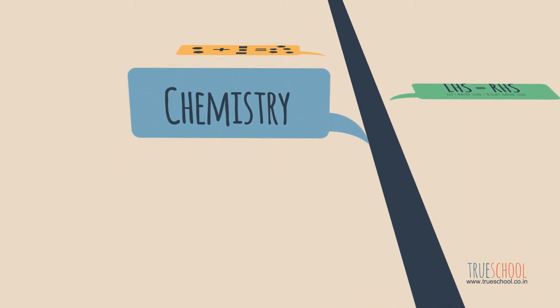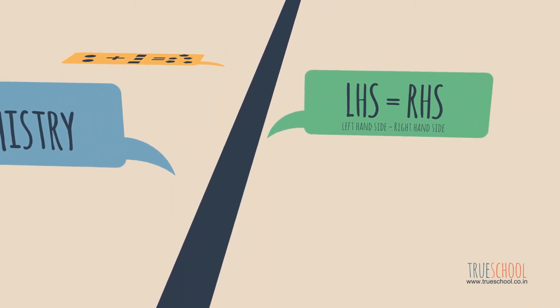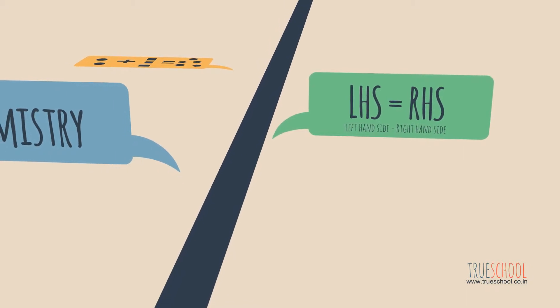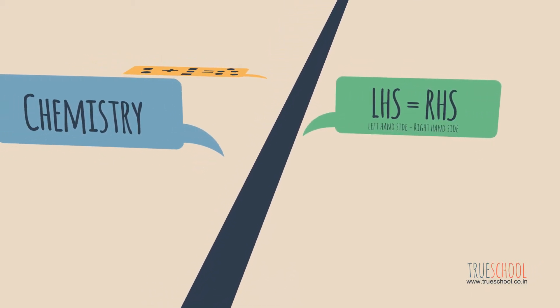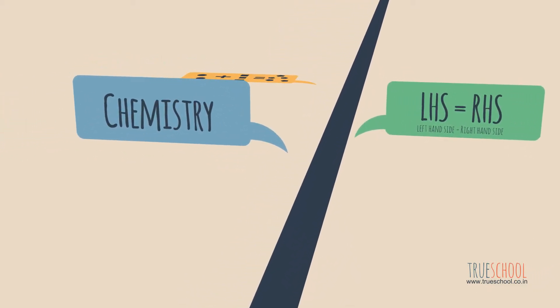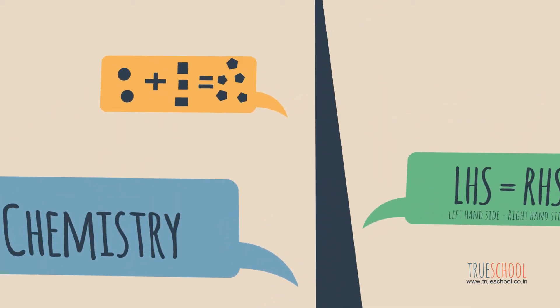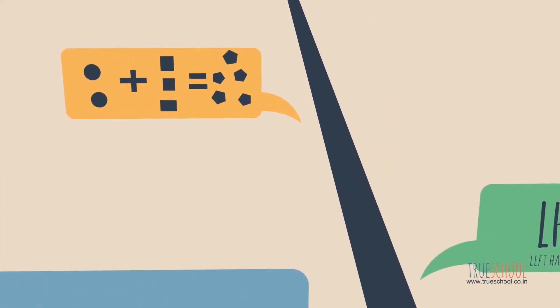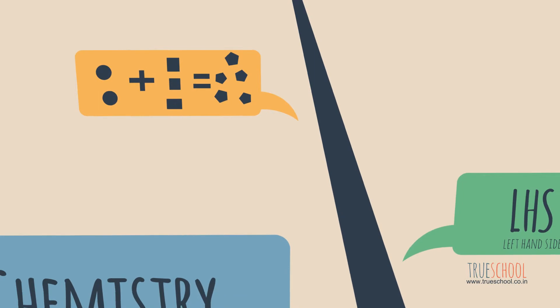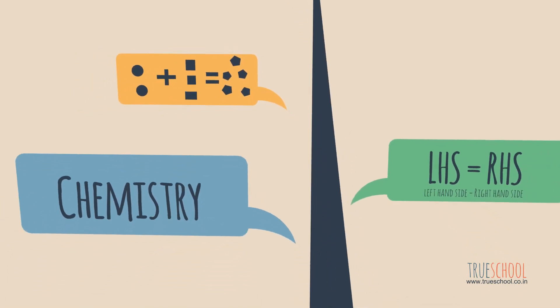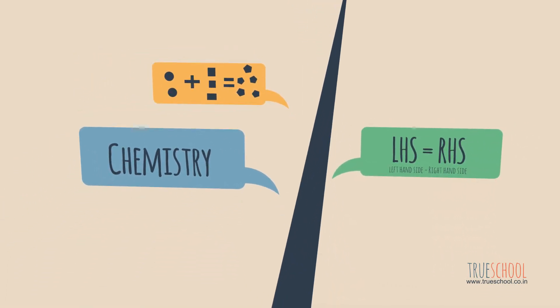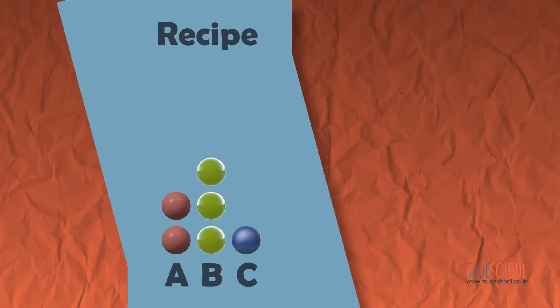The first step in understanding chemistry is to understand basic counting principles of a chemical reaction - counting principles as in one, two, three, and things like two plus three is five. I know that, but you're making it sound terribly simple. I've heard chemistry is not so simple. Trust me, it is terribly simple.